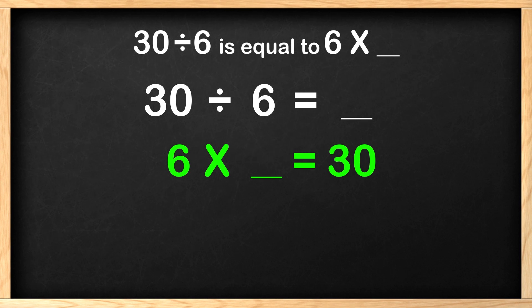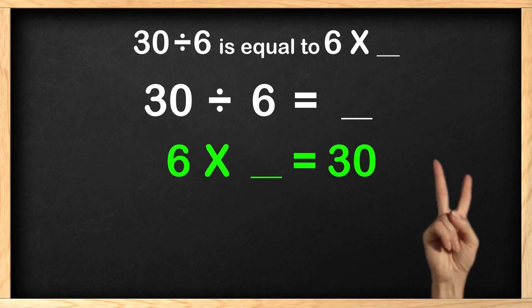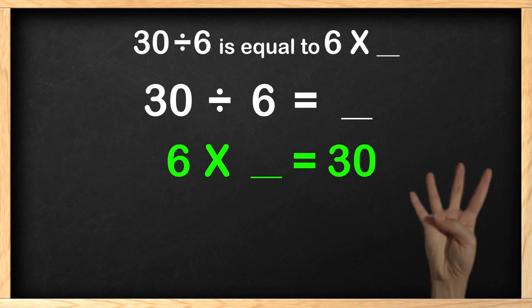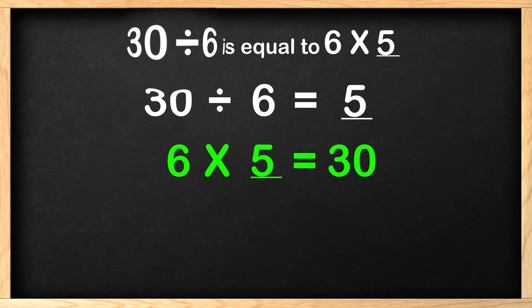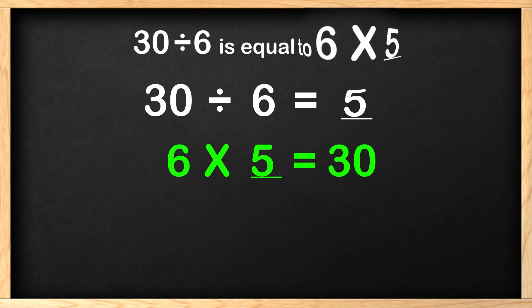Because 6 is one of the factors, we can count by 6. Count by 6 with me. 6, 12, 18, 24, 30. How many times did we count? We counted 5 times. Great job! 30 divided by 6 is equal to 6 times 5. We did it!